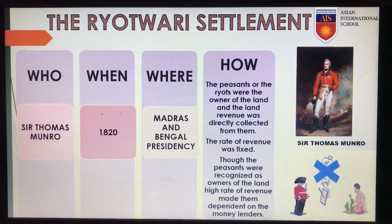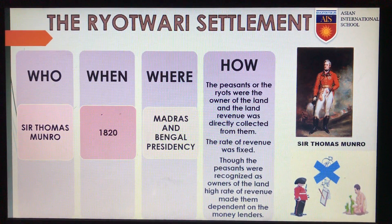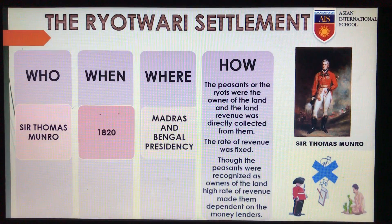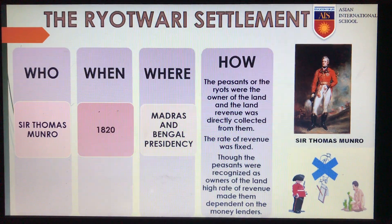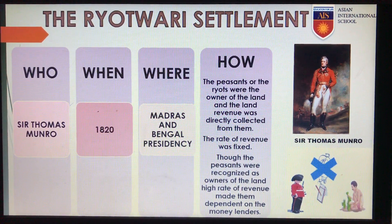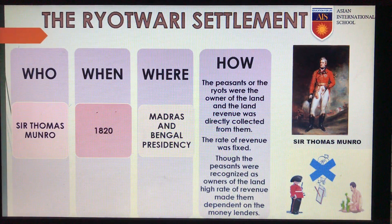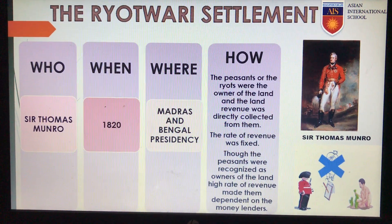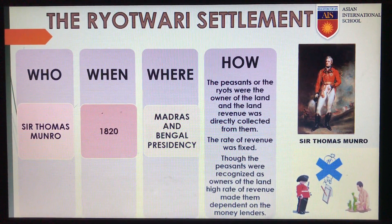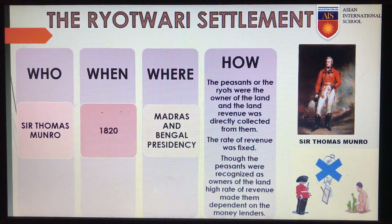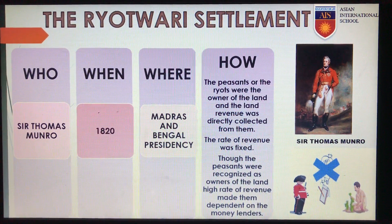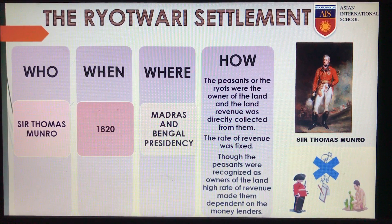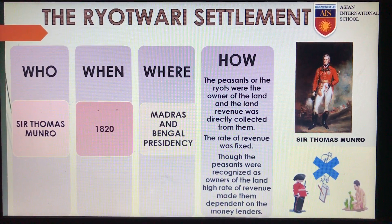The Ryotwari system was introduced by Sir Thomas Munro in the year 1820. It was first introduced in the Madras Presidency but later extended to the Bombay Presidency as well. According to this system, the peasants were considered the owners of the land and the land revenue was directly collected from them. The rate of revenue was fixed at roughly half of the total produce, settled for a period of 30 years after which it could be revised. As a result, the peasants remained heavily dependent on moneylenders.